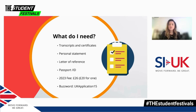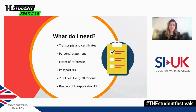You can also use a buzzword. If you want an agent like SIUK to help you with your application, then you may use a UCAS buzzword called UK Application 15 — that's 'UKA' all in caps, then 'Application15' all together with no spaces. What this does is it grants your designated counsellor the ability to view and review your application and make sure that it's all done correctly before you submit it online.